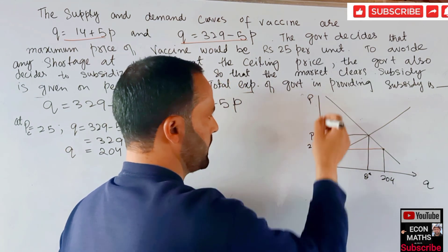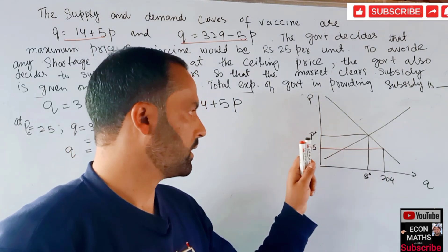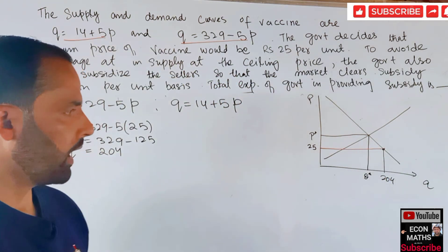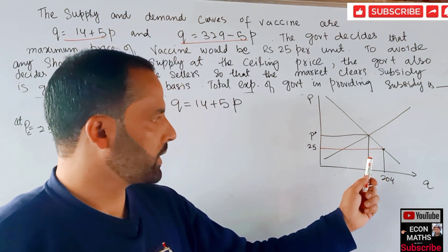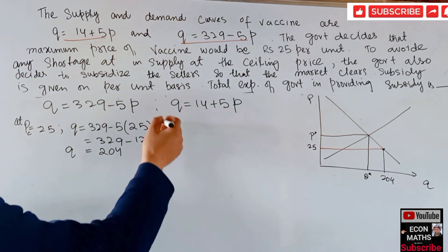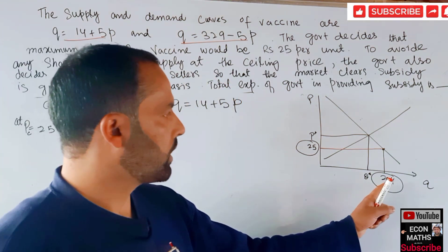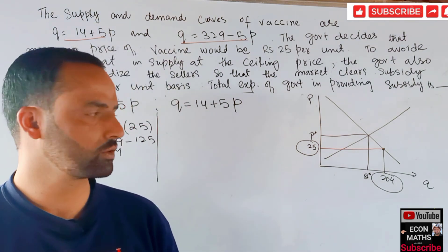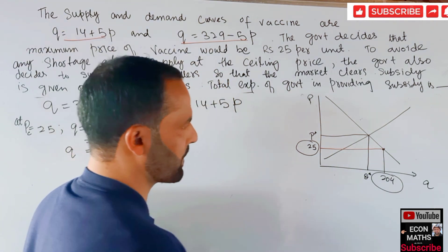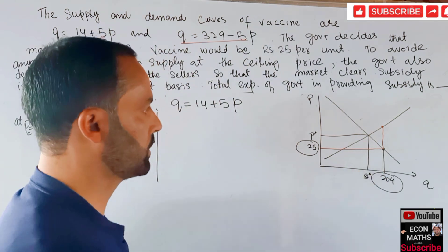So the quantity demanded is 204 units at a price of ₹25 — this is the point on the demand curve. Now we need to find what price the sellers would be willing to accept in order to supply 204 units of vaccine. That price corresponds to a point on the supply curve at Q = 204.